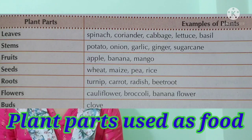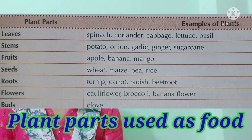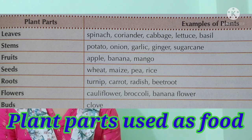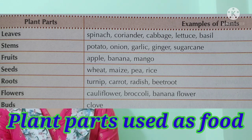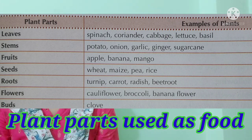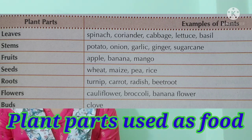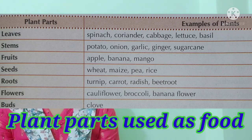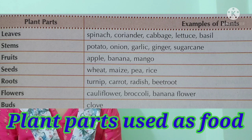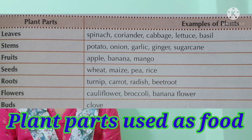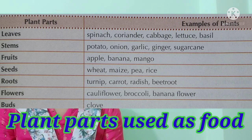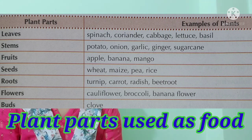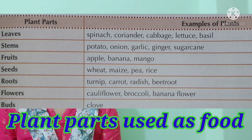Plants store food in leaves — for example, spinach, coriander, cabbage, lettuce, and basil. These are all leaf vegetables we use as food. Next, for stem: potato, onion, garlic, ginger, and sugarcane are the stem parts of the plant which we use as food.